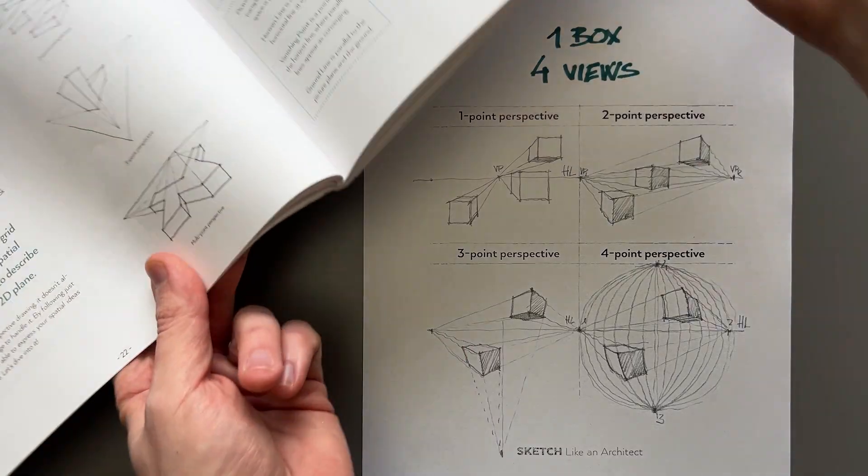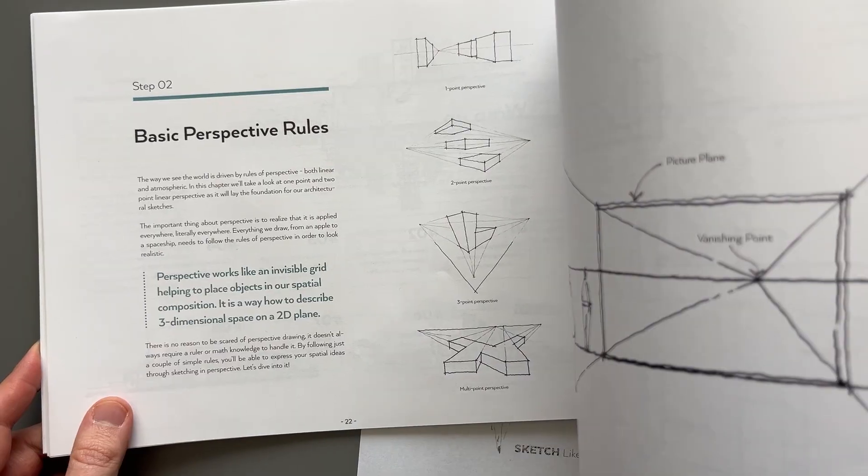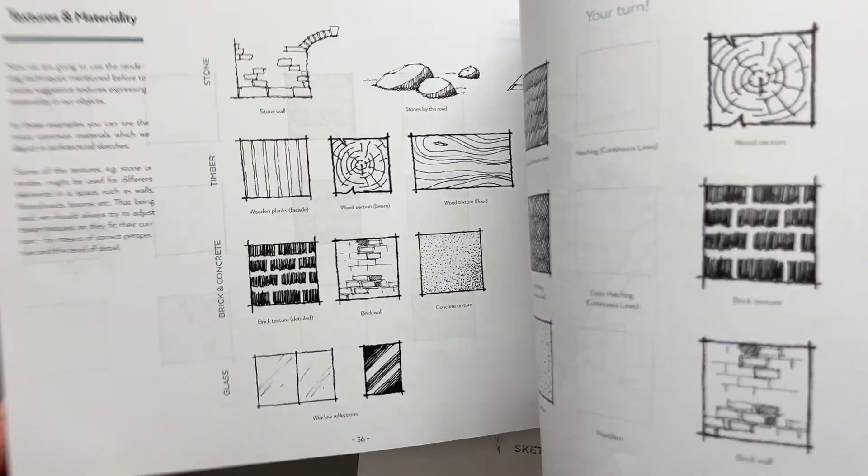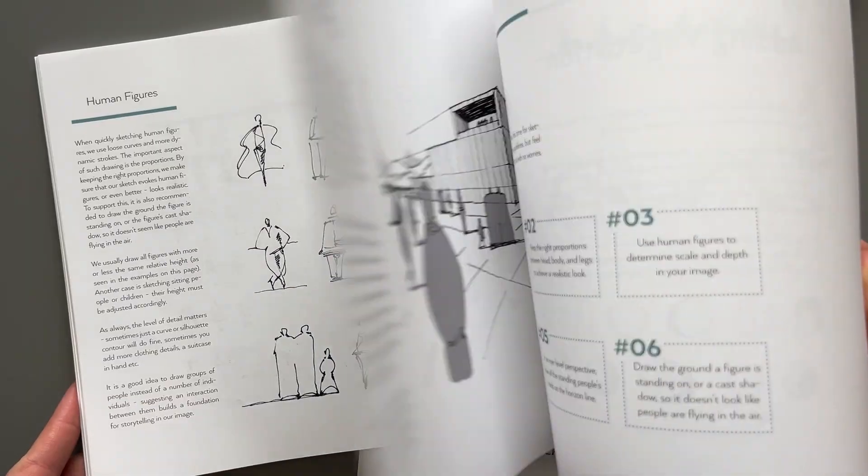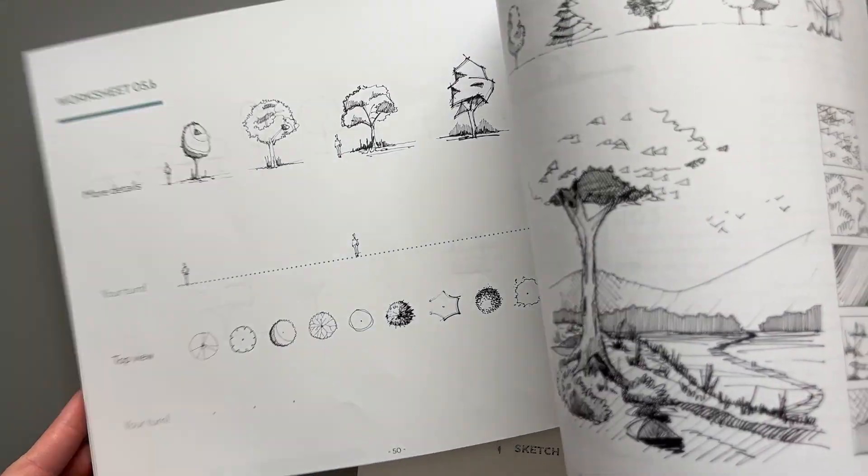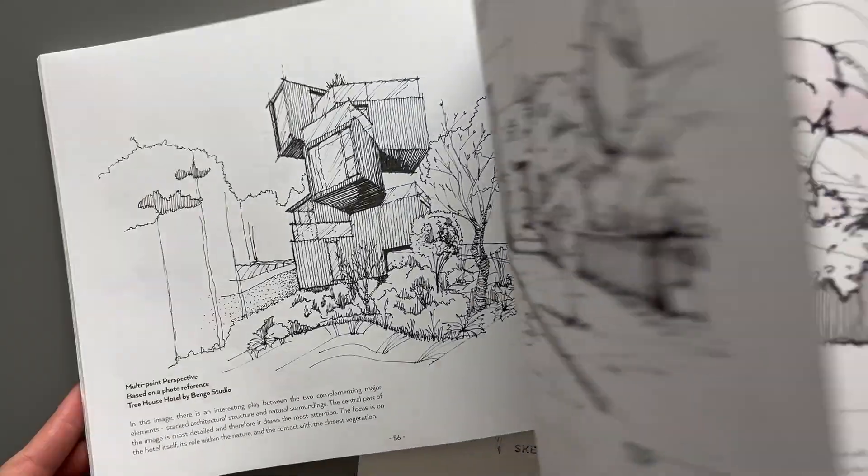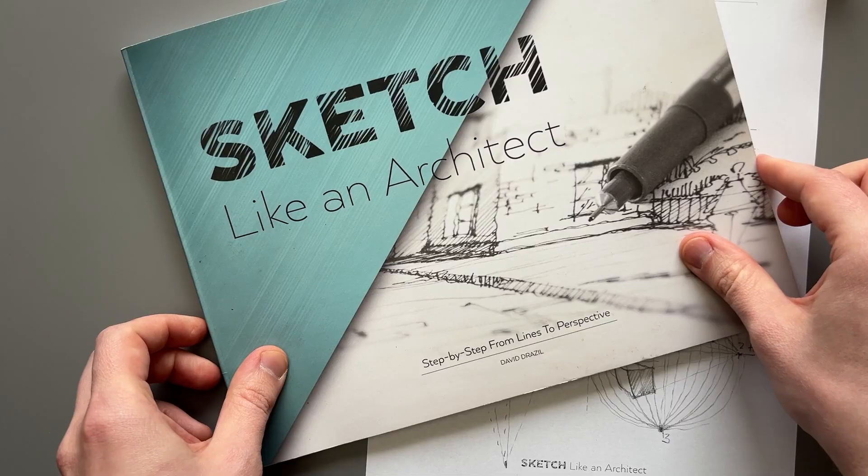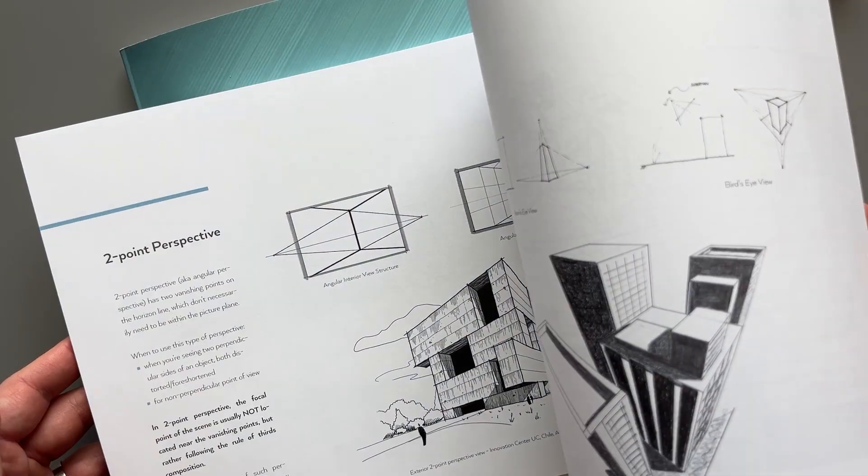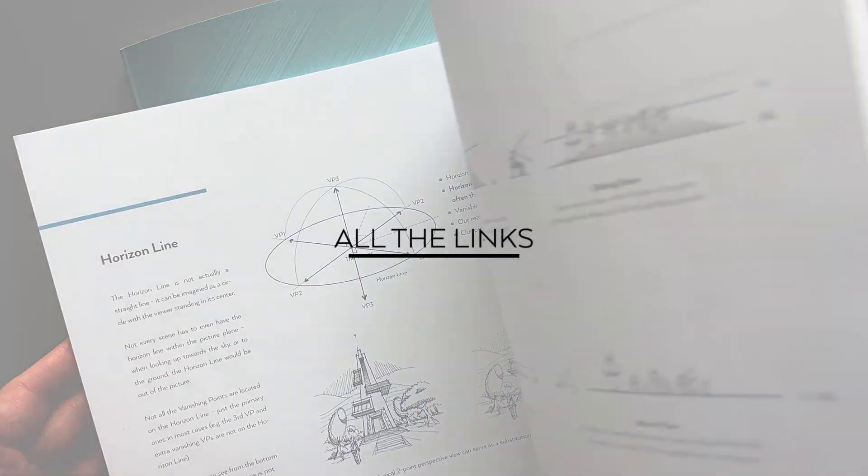If you'd like to learn more about perspective drawing and see more examples and worksheets and different explanations, and even how to populate your perspective sketches with vegetation and people and how to put it all together, you can check out my two books, Sketch Like an Architect, which are available as a PDF or as a printed paperback just like these ones.